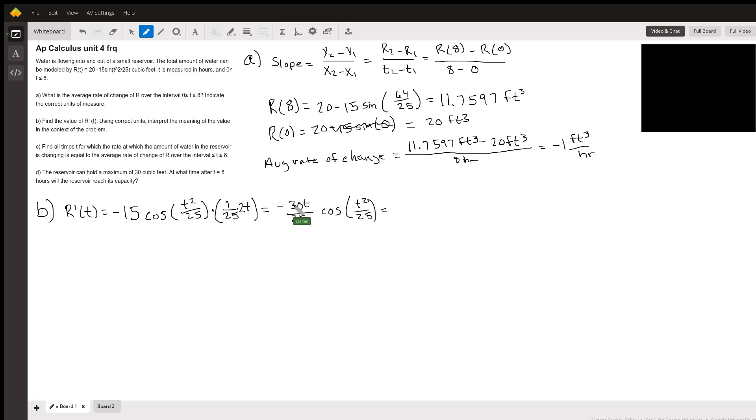And finally, negative 30 and 25, or just 30 and 25, these are both divisible by 5, so I can simplify this fraction. It will be negative 6 over 5 times T times cosine of T squared divided by 25. And the units on this will be cubic feet per hour, the same units as part A.